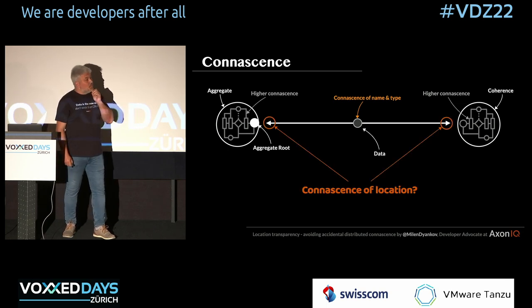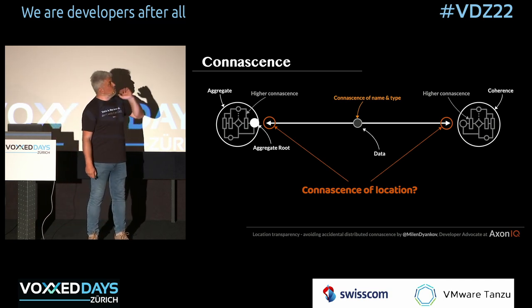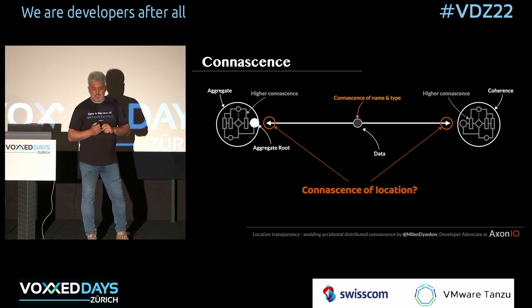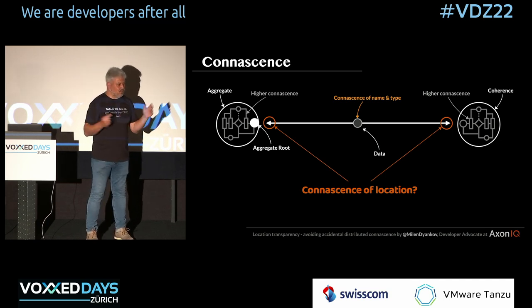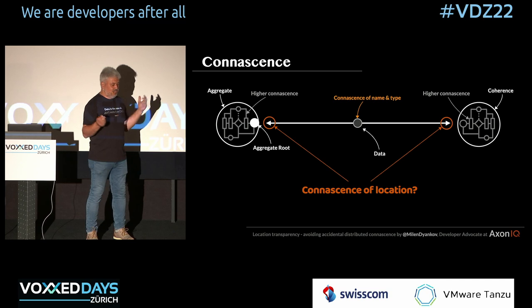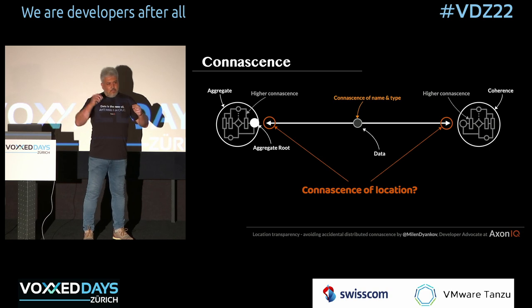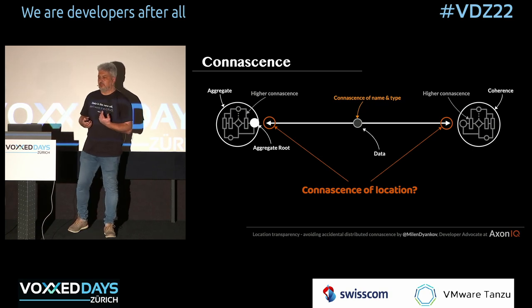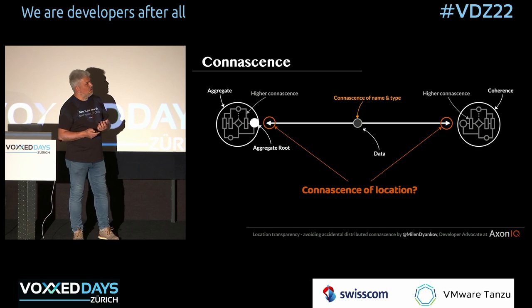The thing that we commonly overlook when we draw diagrams is tiny little arrows, which make the assumption that magically things connect to each other and exchange data and it all somehow magically works. Connescence of location is not something that's in the original book, but it's something I argue exists. Let me try to explain what I mean by that.